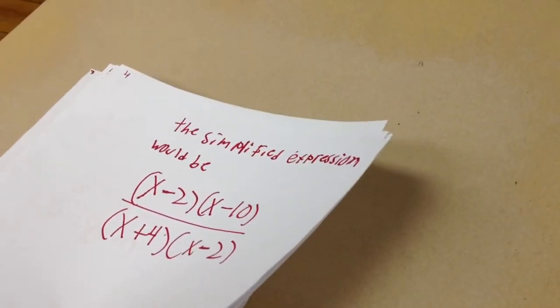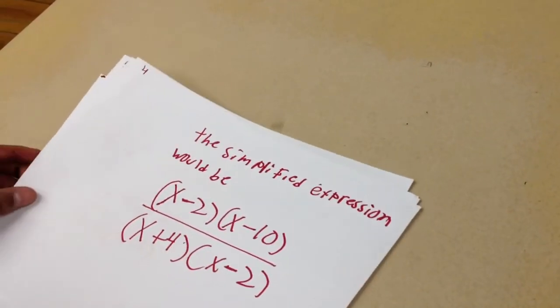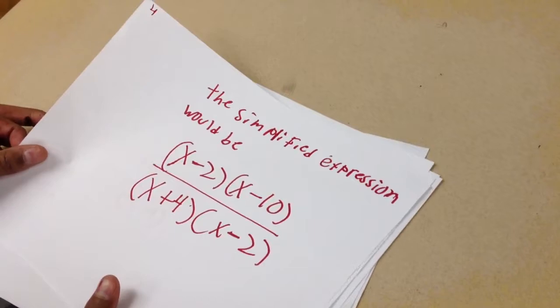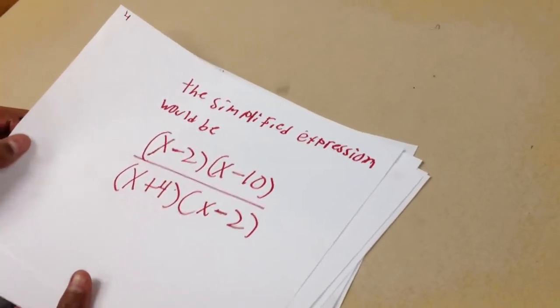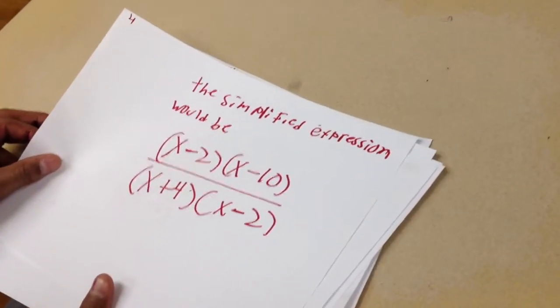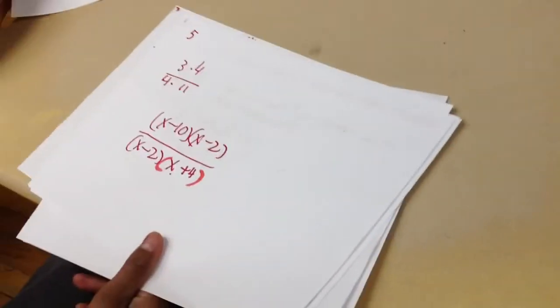So the factored expression would be x minus 2 times x minus 10 over x plus 4 times x minus 2. Put that to the side, we're going to come back to that later.